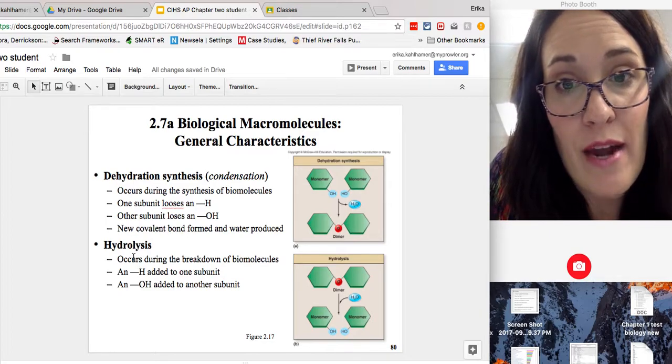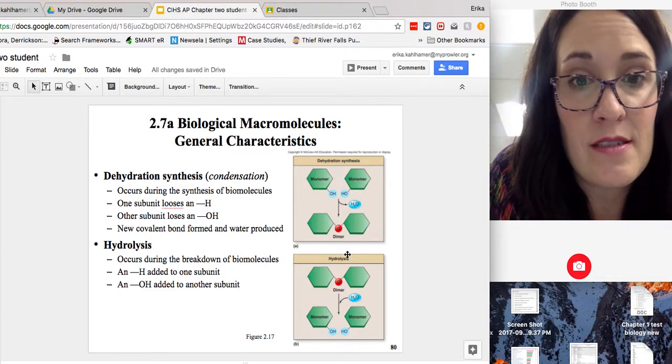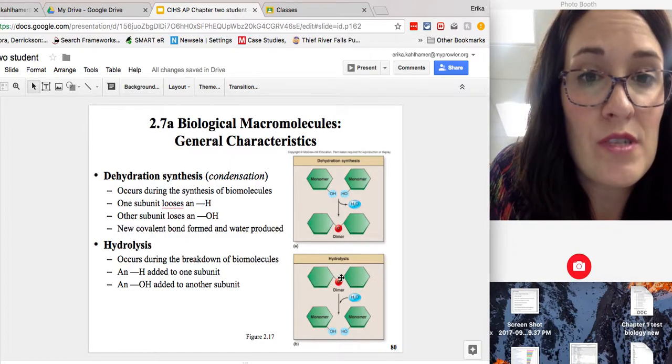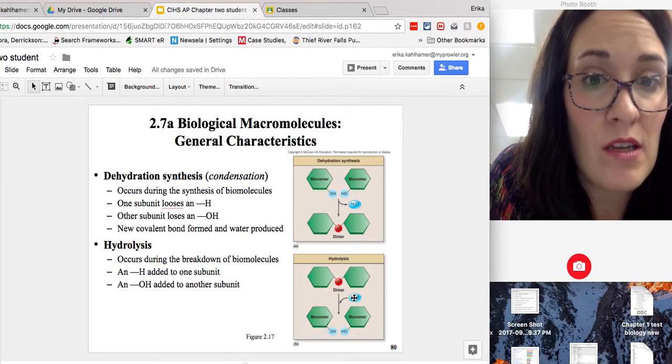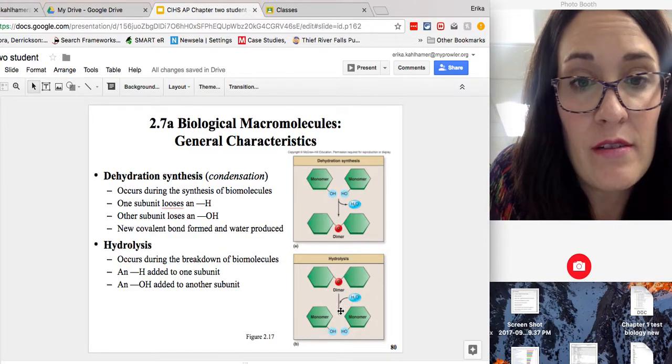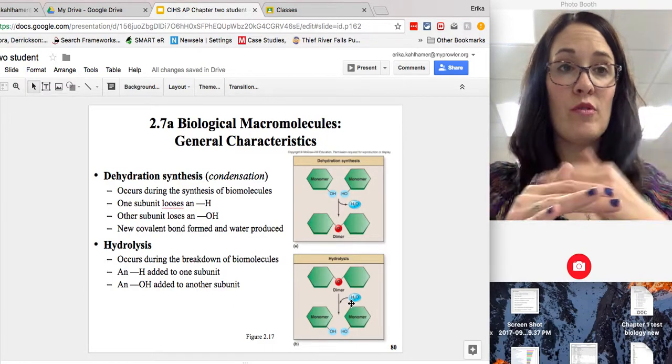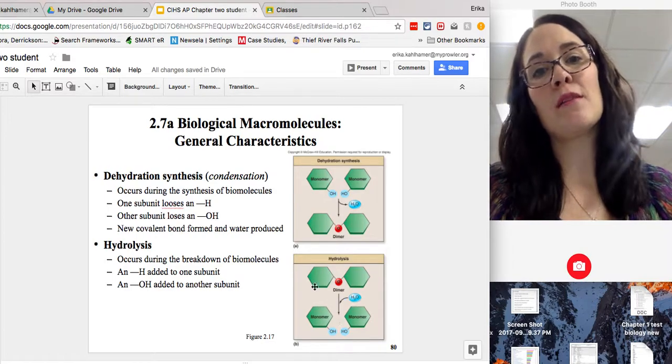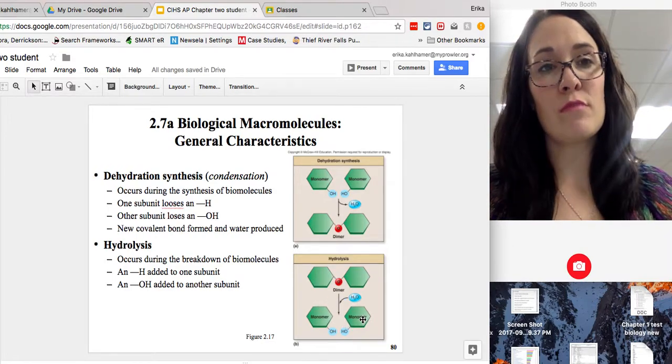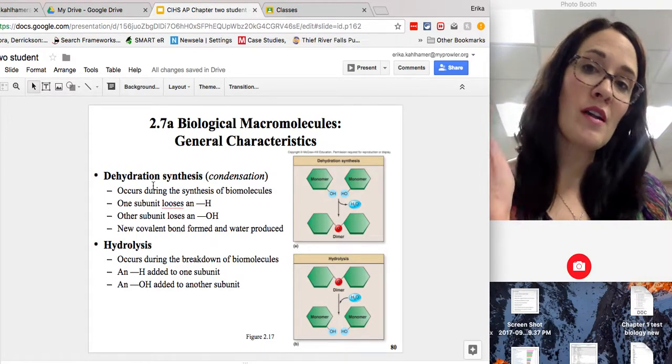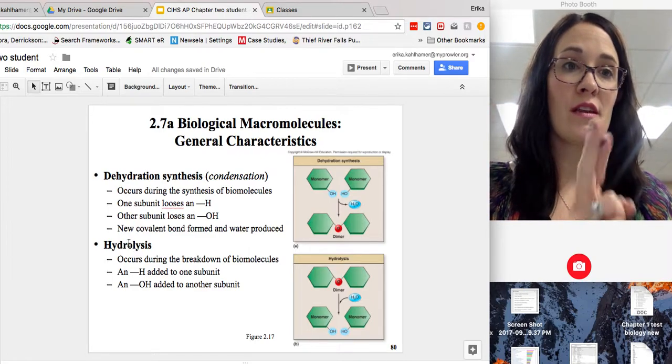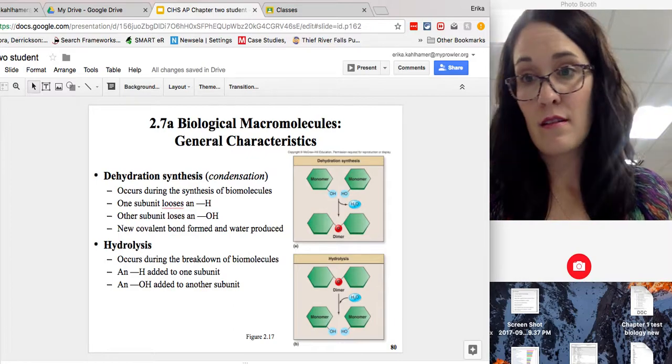Hydrolysis is the opposite reaction of dehydration synthesis. So here we're starting products. These are reactants. We're starting with one dimer and one molecule of water. You add them together. Water, lysis, hydrolysis, water breaks. If you lyse something to break it, it breaks up this dimer into two monomers. So dehydration synthesis and hydrolysis are two chemical reactions that are opposites of each other.